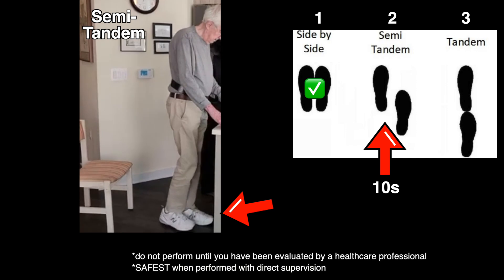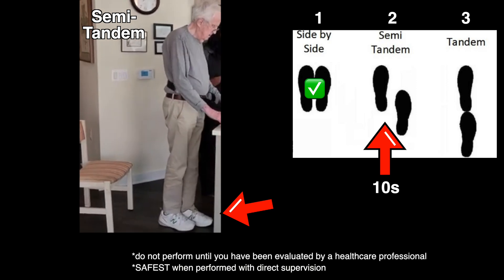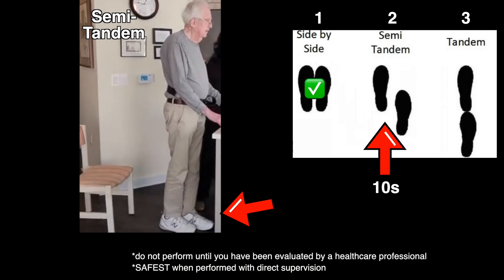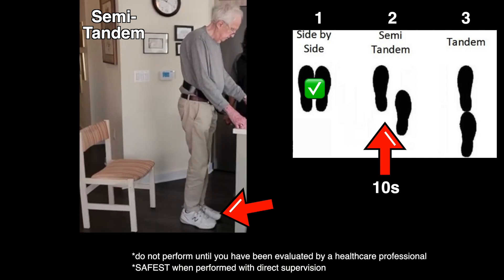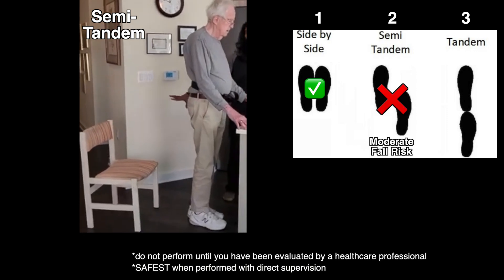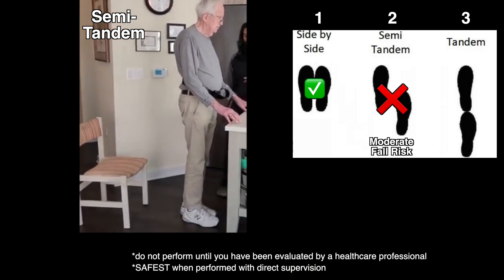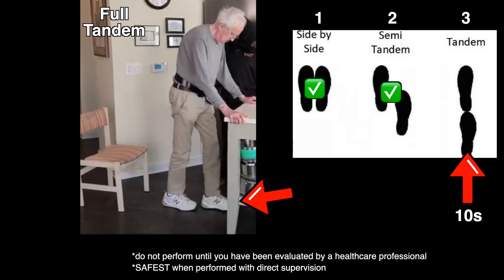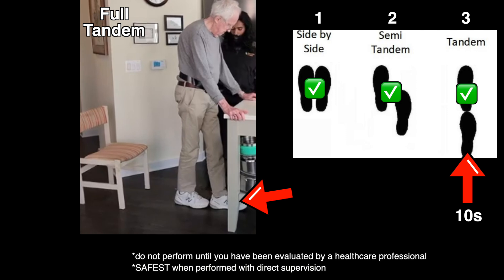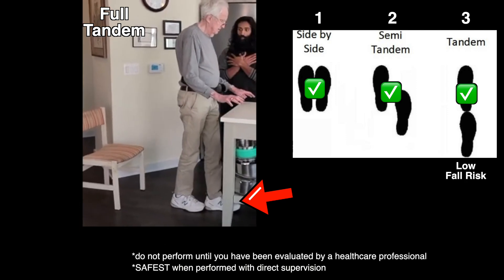If it can be performed safely, it progresses to the moderately difficult semi-tandem, where one foot is arranged slightly behind the other for 10 seconds — this should be done on both sides. Inability to perform this without help makes one more likely to be a moderate fall risk. If it can be performed safely, it progresses to the last and most difficult full tandem stance. The ability to perform this for 10 seconds makes one more likely to be a lower fall risk.